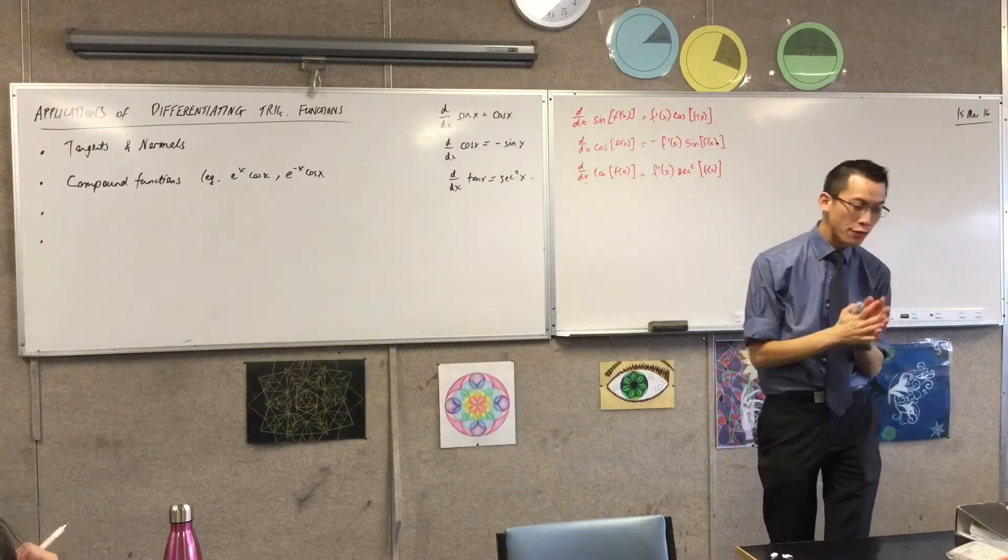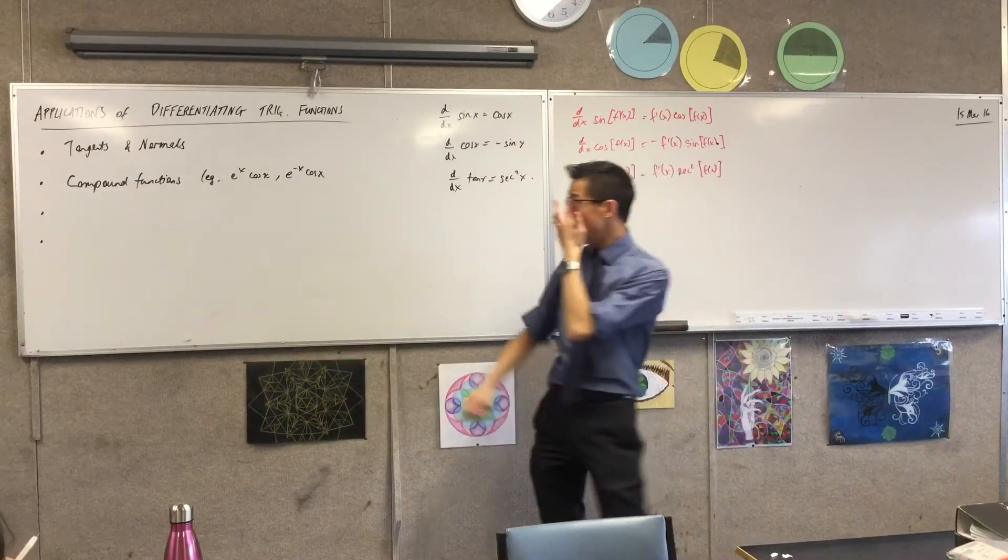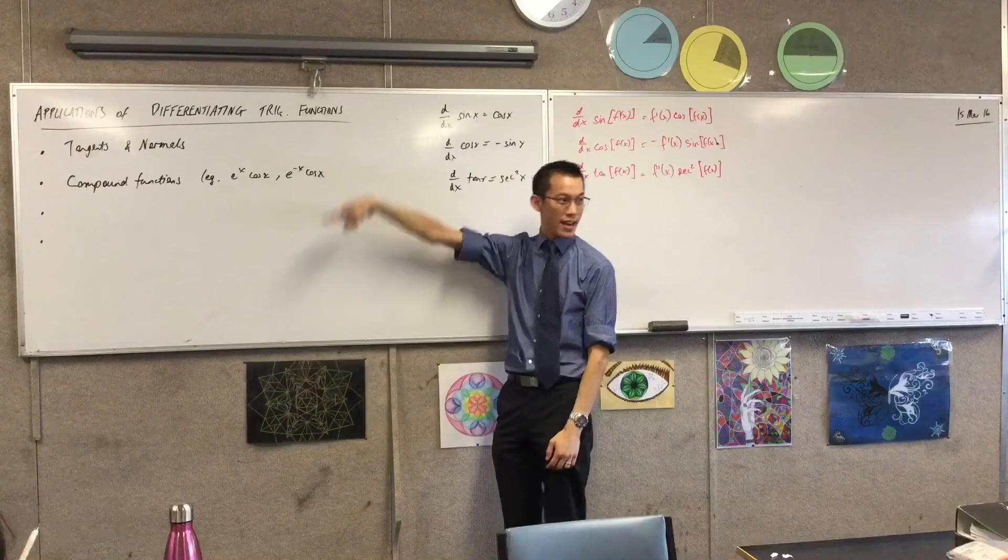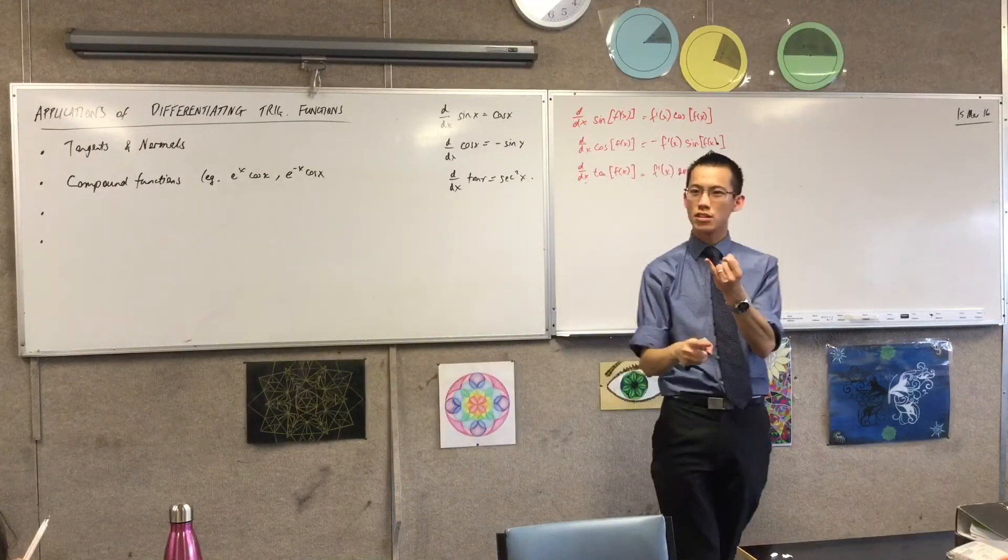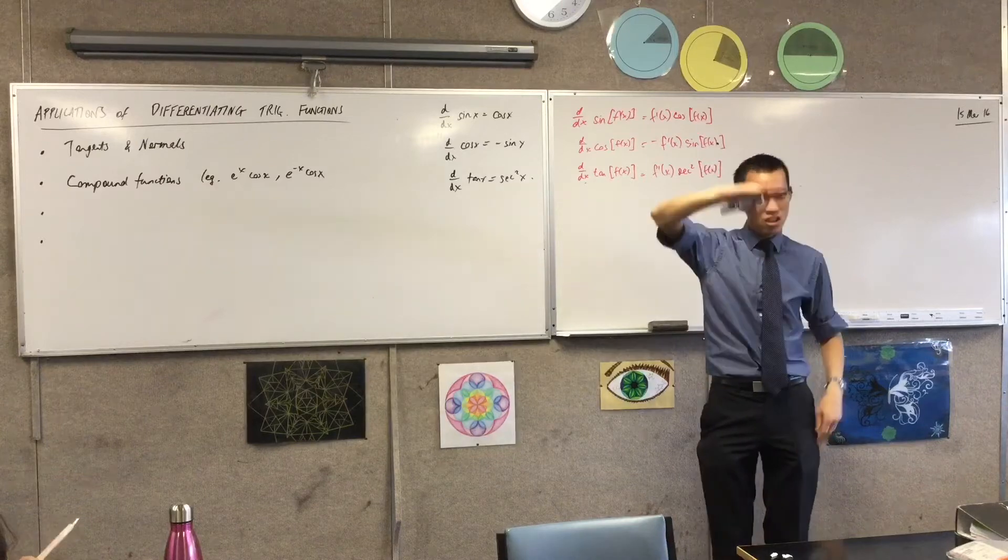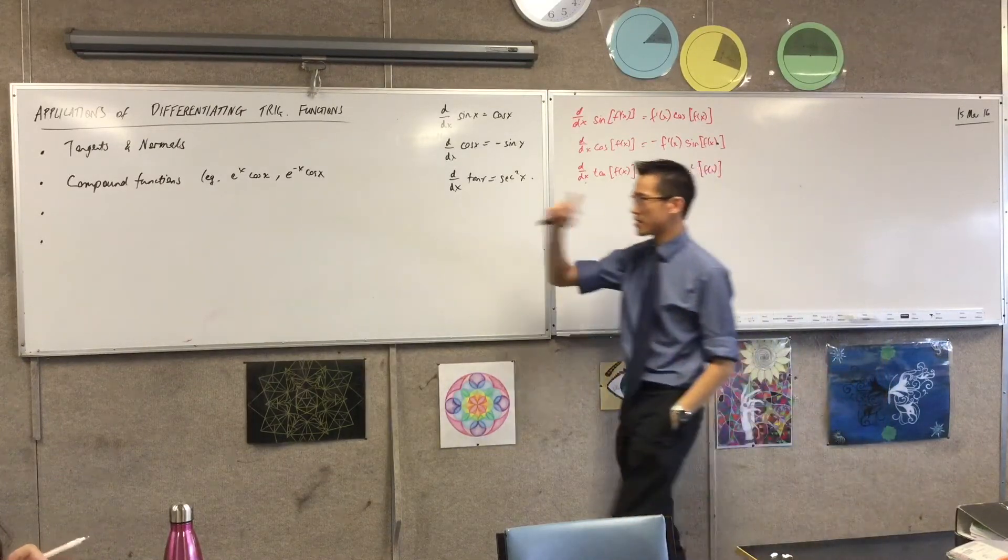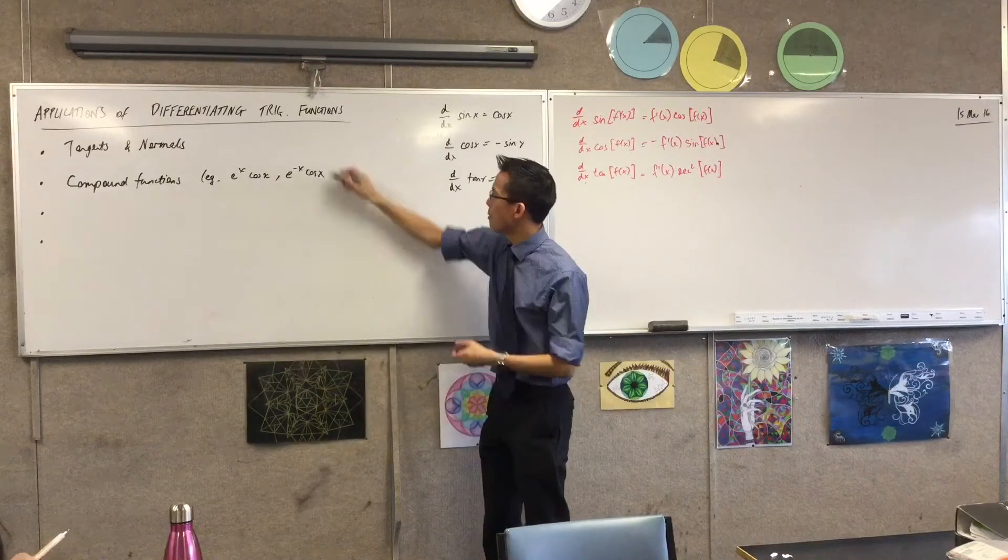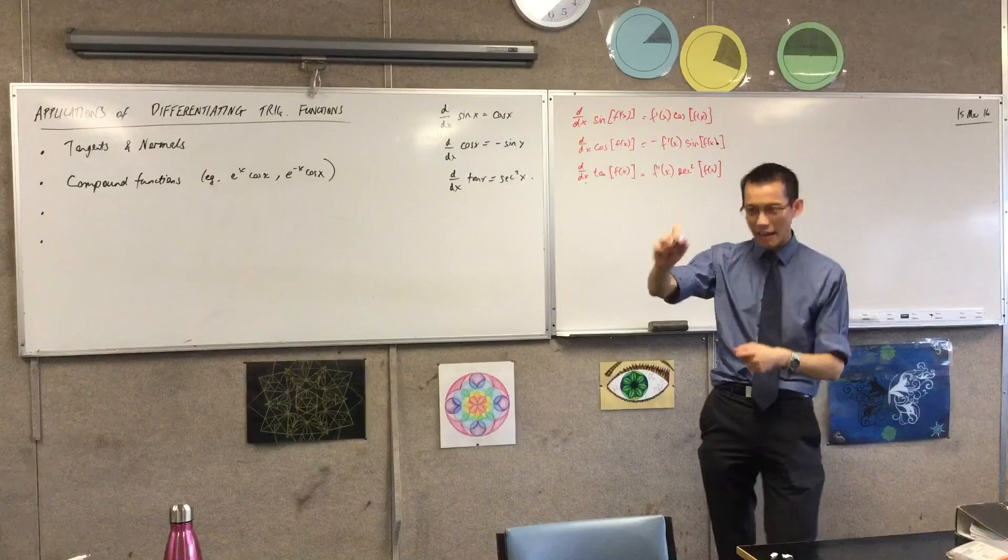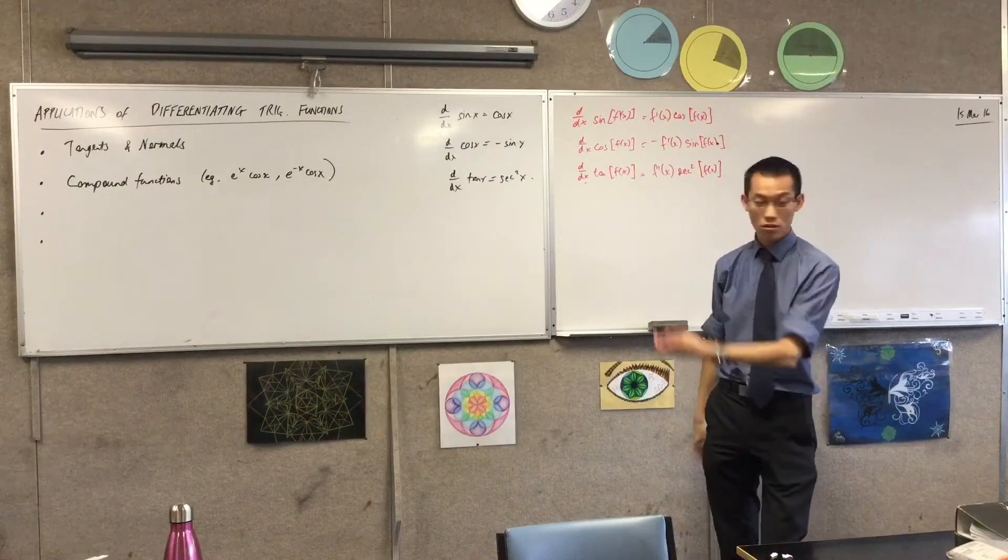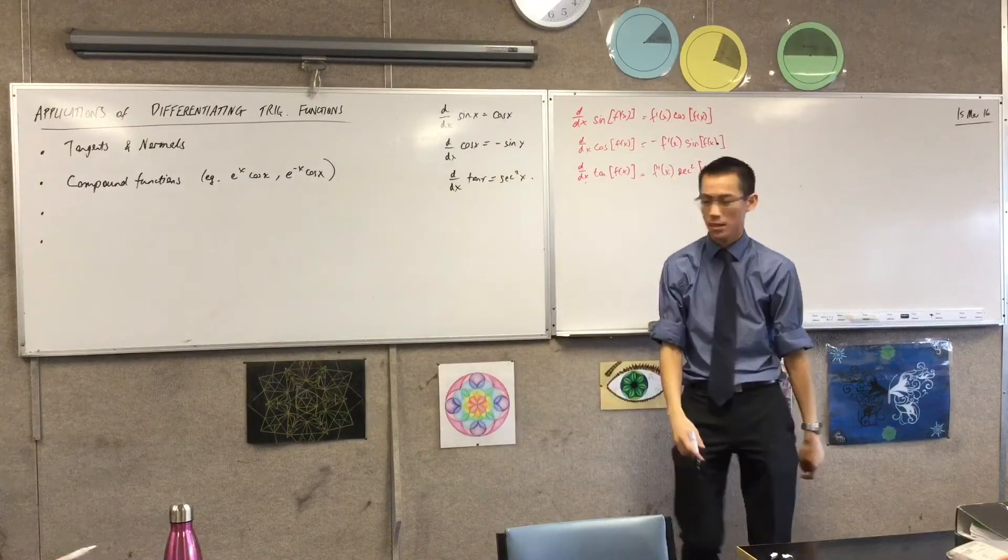So for example, every stringed instrument in the world, when you strike it, it starts to oscillate. It goes up and down and up and down. But then if you just leave it, just by the nature of tension in the string and air resistance, it'll gradually slow down until it stops. And that's exactly what this picture is doing. Now, these are compound functions, but they involve the trig functions in them to give that sort of up-down behavior. So in order to be able to deal with them, we needed all of these. So that's a classic application.